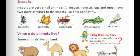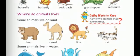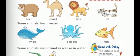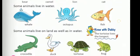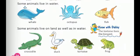Now let us see the next topic: where do animals live? Some animals live on land — they are bear, camel, lion and cat. Children, tell me two extra animals that live on land other than these. Some animals live in water — they are whale, octopus and fish. Think of two more animals that live in water. Some animals live on land as well as in water — they are crocodile, duck, tortoise and frogs. You might have seen ducks swimming in water, and similarly crocodiles, tortoise and frogs also swim in water.